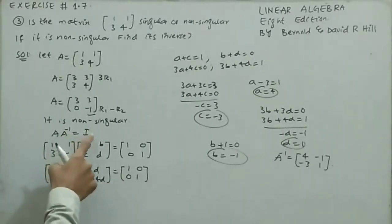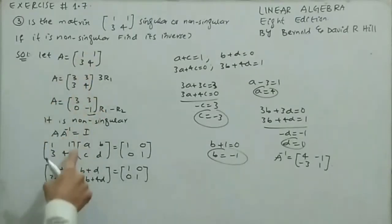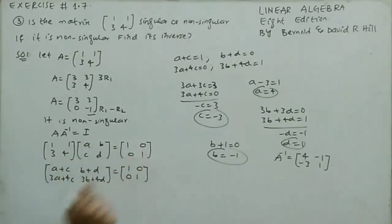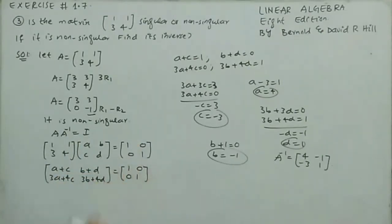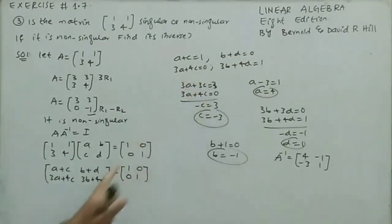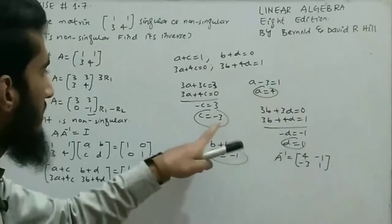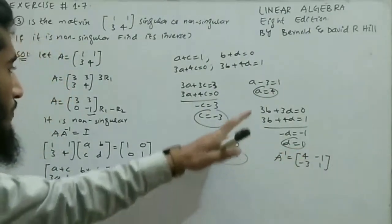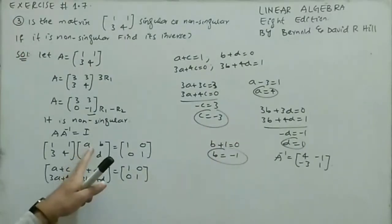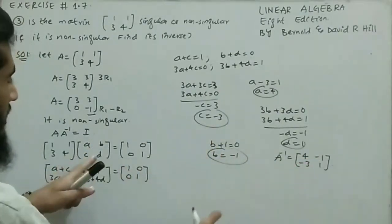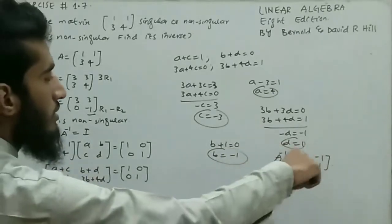For the inverse, using the formula A · A⁻¹ = I, where A = [1, 1; 3, 4] and A⁻¹ = [a, b; c, d], the identity matrix is [1, 0; 0, 1]. Multiplying gives four linear equations: a + c = 1, b + d = 0, 3a + 4c = 0, 3b + 4d = 1. Solving gives a = 4, b = -1, c = -3, d = 1, so A⁻¹ = [4, -1; -3, 1].